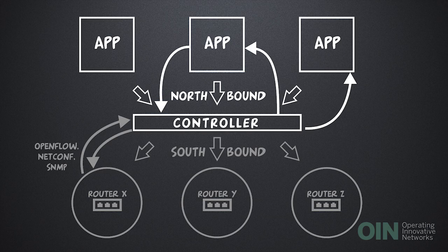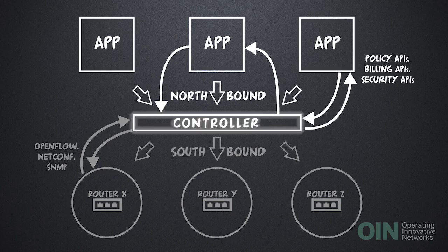Northbound APIs are controller-specific, such as policy APIs, billing APIs, or security APIs, so applications are written for one specific controller. In the other direction, apps will request network service changes from the controller, using information from users on what they need, along with information the controller provides about current capabilities.